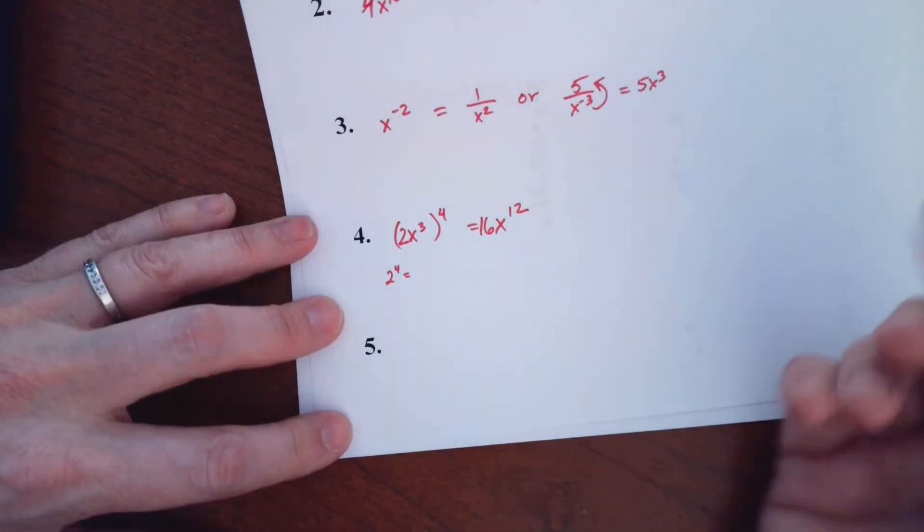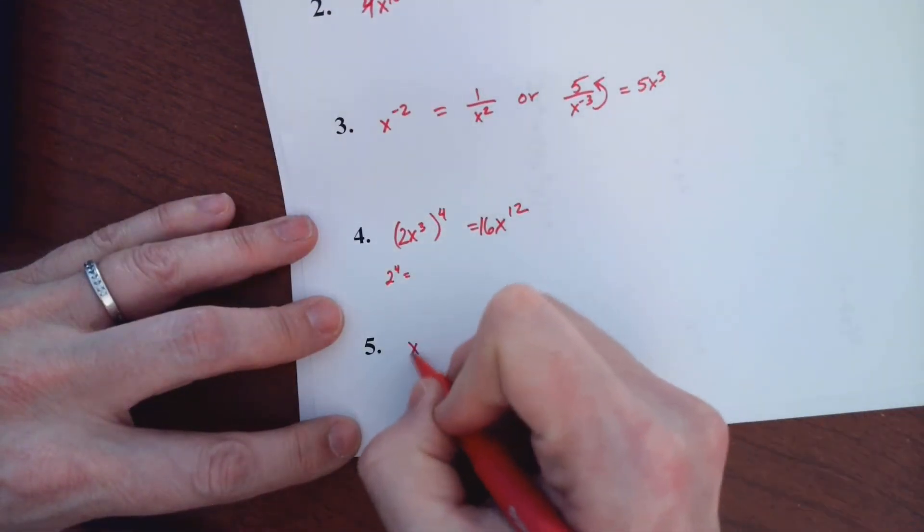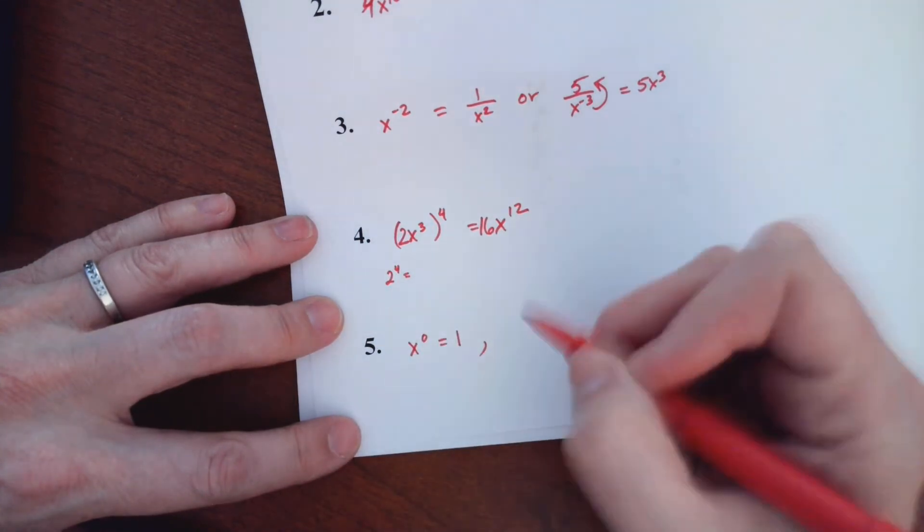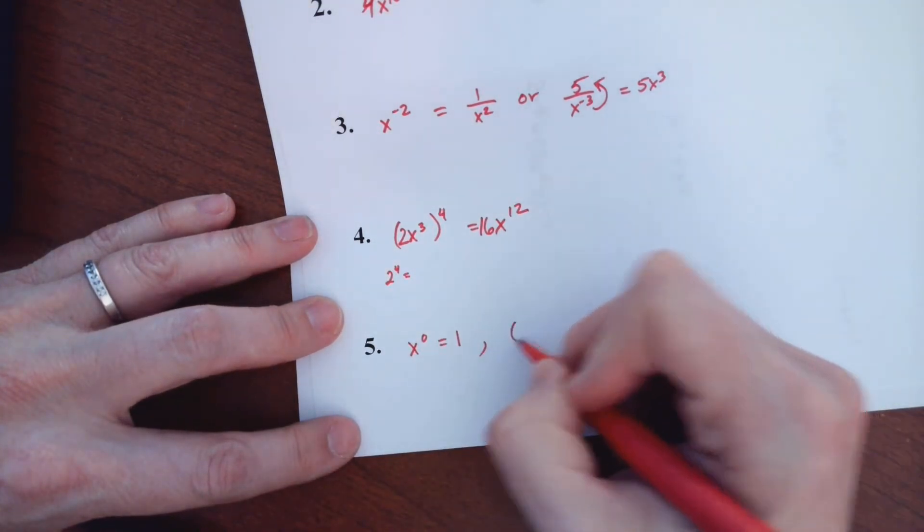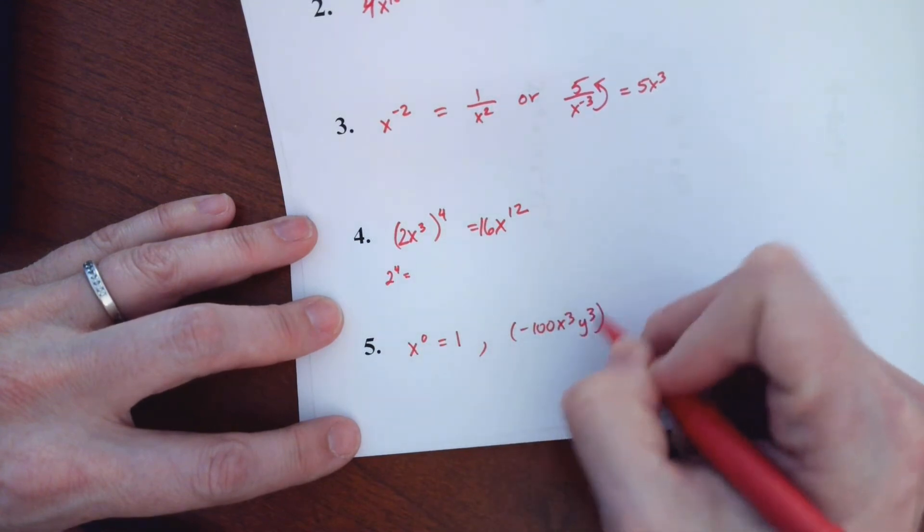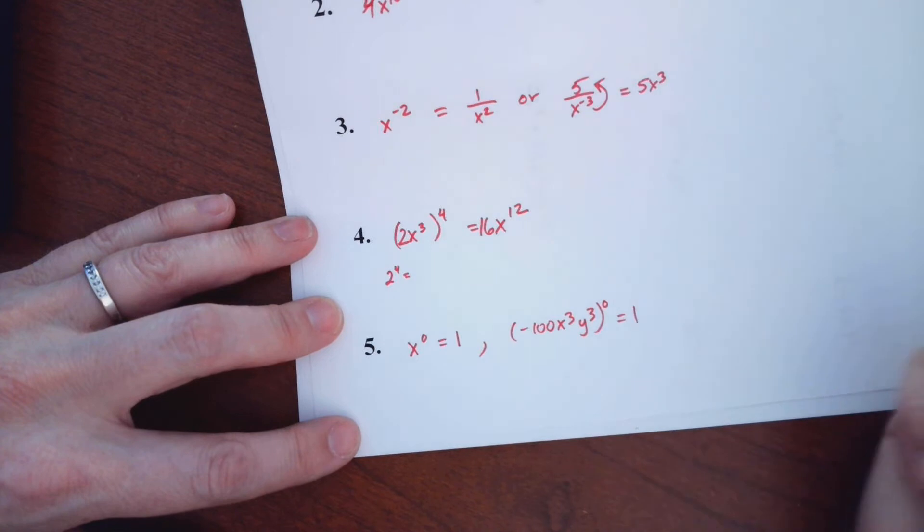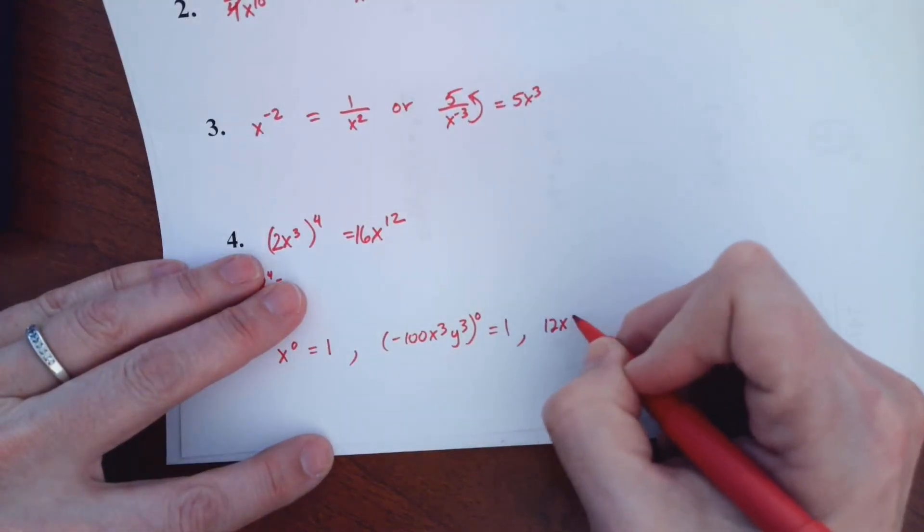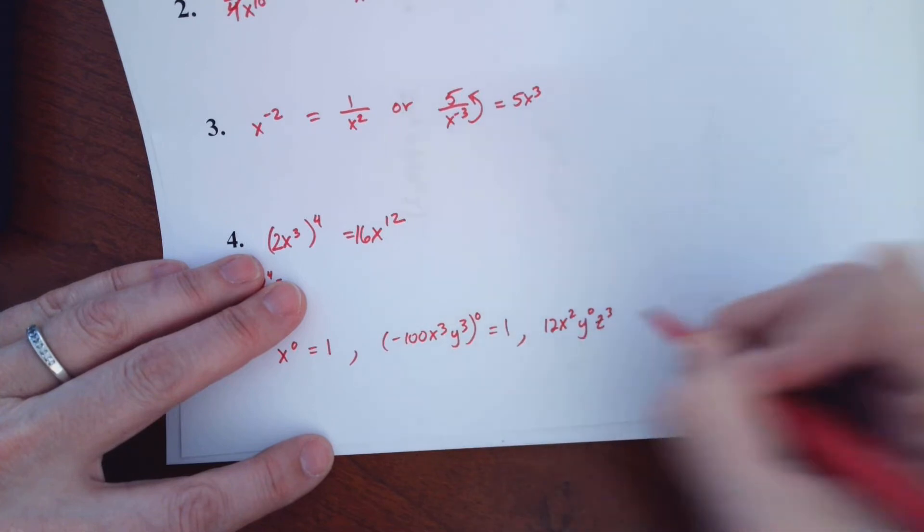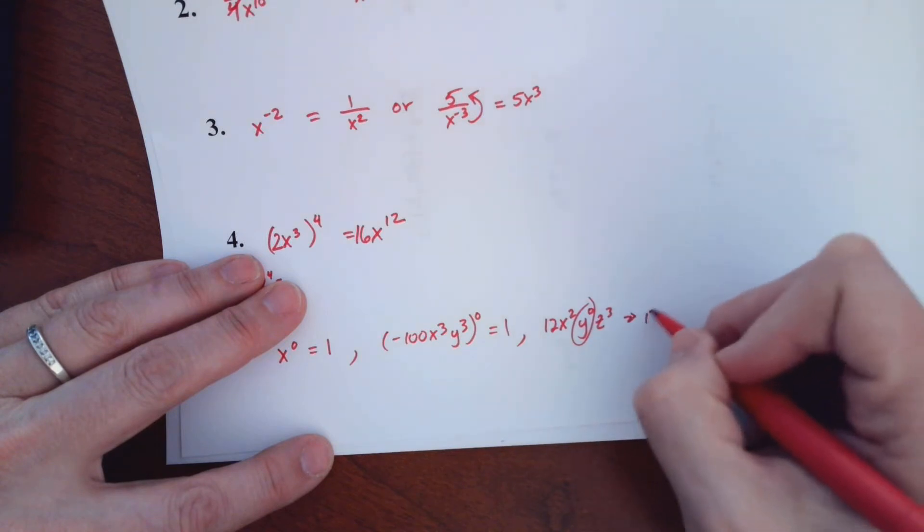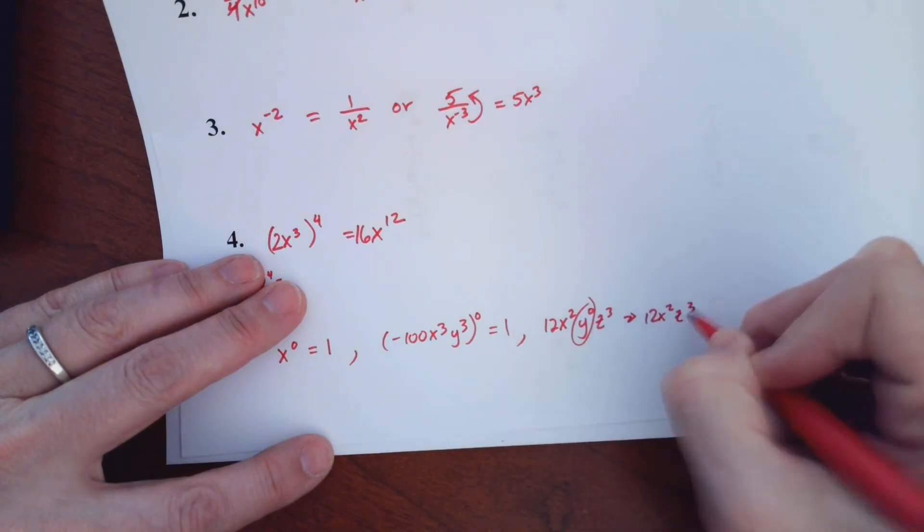And the last one I want to go over is to the zero power. So anything to the zero power makes 1. Even if it's like a huge thing, like negative 100x to the third, y to the third, all to the zero, it all turns into a 1. Now if only part of it has a zero, like let's say you have 12x to the second, y to the zero, z to the third, well, this part becomes 1, but the rest of it just stays there. So 12x squared, z to the third.